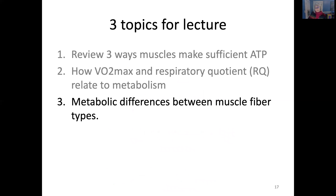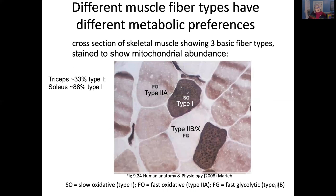Topic three: metabolic differences between muscle fiber types. A cross-section of skeletal muscle stained for mitochondrial abundance shows three basic fiber types. Type 1 fibers — slow oxidative — are slow to contract but also slow to fatigue, and have lots of mitochondria shown by dark staining. Type 2a — fast oxidative — are fast twitch with an intermediate level of mitochondrial staining. Type 2b fibers — fast glycolytic — have very low mitochondrial abundance; they are fast twitch but also fast to fatigue.